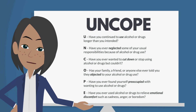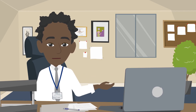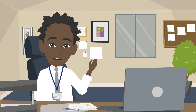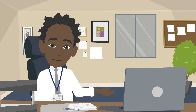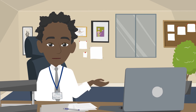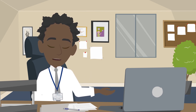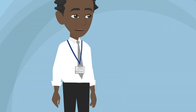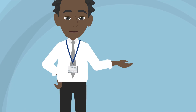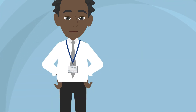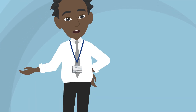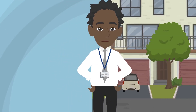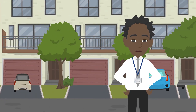Now let's hear from David, a child welfare worker who will tell you about how he used the UNCOPE in a typical situation. Our local child welfare office received a report about the safety of Carter, age four, and Adrian, age three months. The report alleges that Miranda, a single mom, is using drugs and not appropriately supervising the children. Carter has been seen on multiple mornings outside by himself, not dressed appropriately for the weather. The home is reported as unclean with no food, and Adrian has not seen a physician since his release from the hospital at birth. As the assigned child welfare worker, I responded to the home.